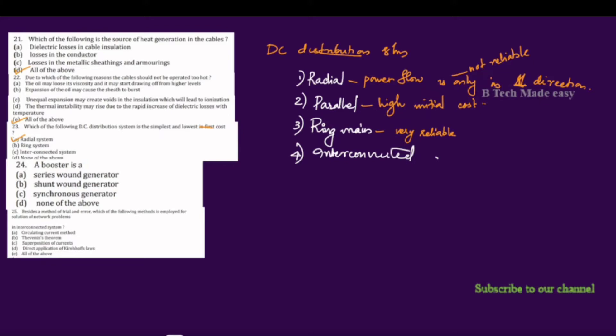In the ring main system, the distribution transformer has two feeders connected. If one fault occurs, the alternative path allows supply to continue — that is the key advantage of the ring main system.